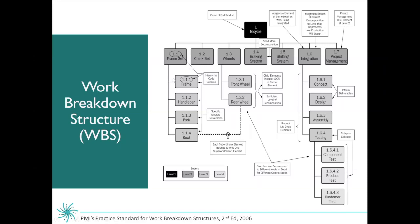Below level two would be level three, and you can tell by the numbering system as well. So we have 1 for the bicycle, 1.1 for the frame set, 1.1.1 for the actual frame. You will see that under integration, we also go down to level four — 1.6.4.1. The lowest level of your work breakdown structure is called the work package level, and this is where you'll want to focus on estimating time, cost, and resources.